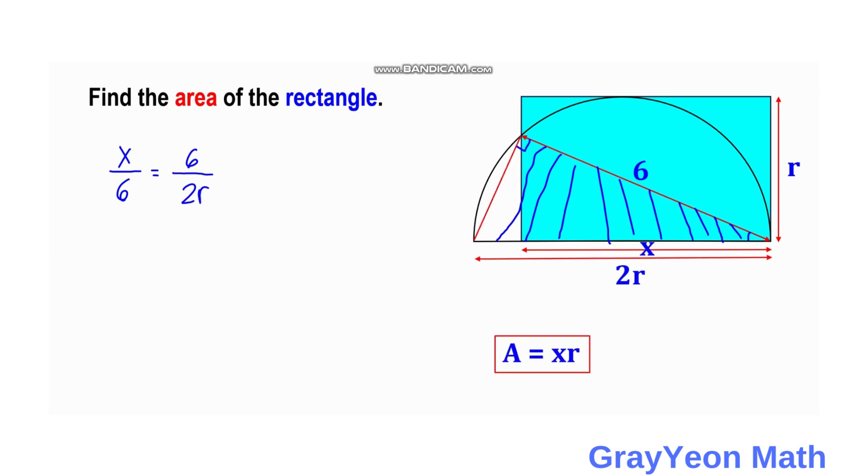Next, we cross multiply. We have xr equals 6 times 6 over 2. Therefore, we have xr equals 18 square units. But area equals xr, so area equals 18 square units. And that is our answer.